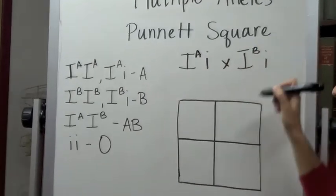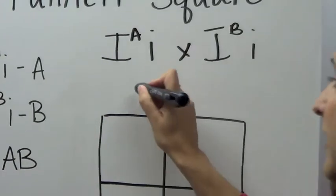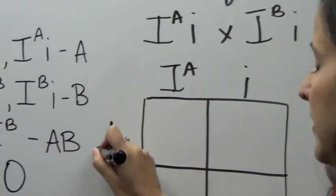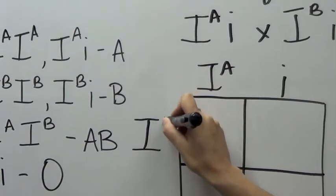When you set this up, you have to make sure that you put one parent on each side of the Punnett square, because if not it will really mess up your results.